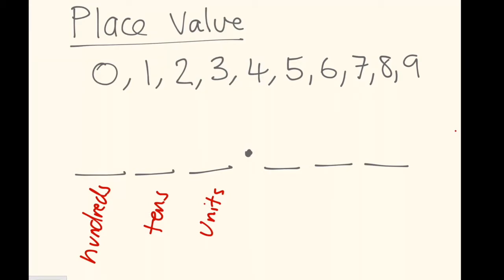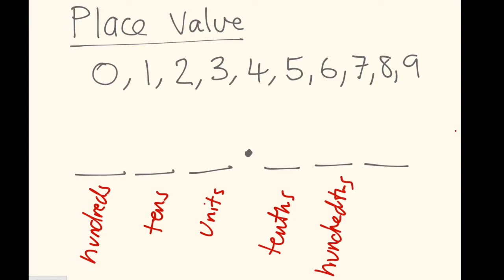And I would know that the first number after the decimal point represents the tenths. The second number after the decimal point represents the hundredths. And the third number represents the thousandths. And I could keep going that way as well. So just as you go to the left the numbers get bigger, as you go to the right the fractions of amounts get smaller. And that's place value.